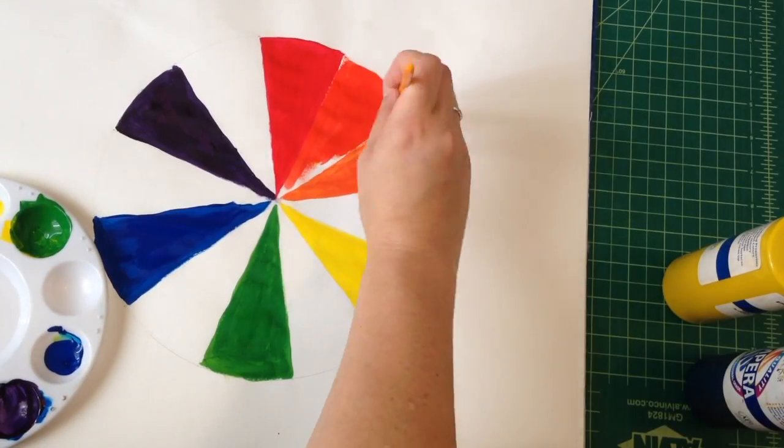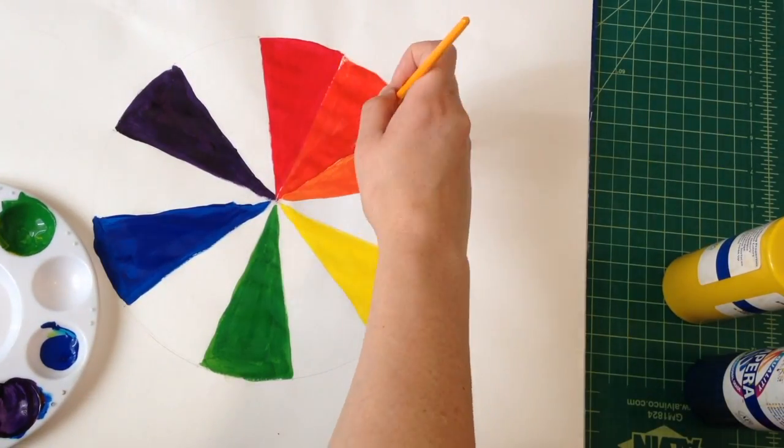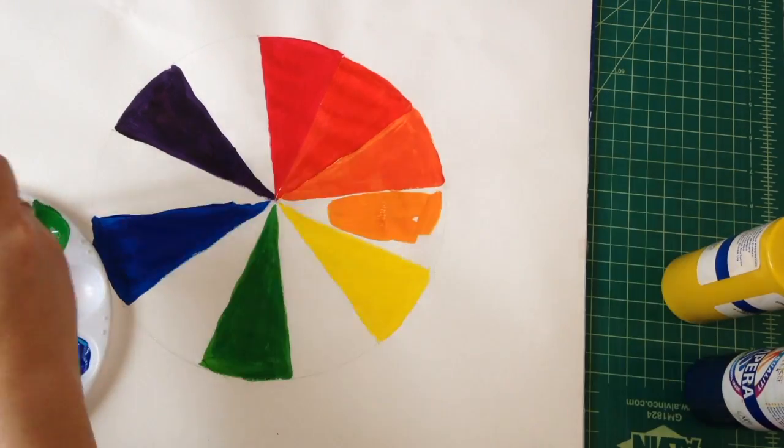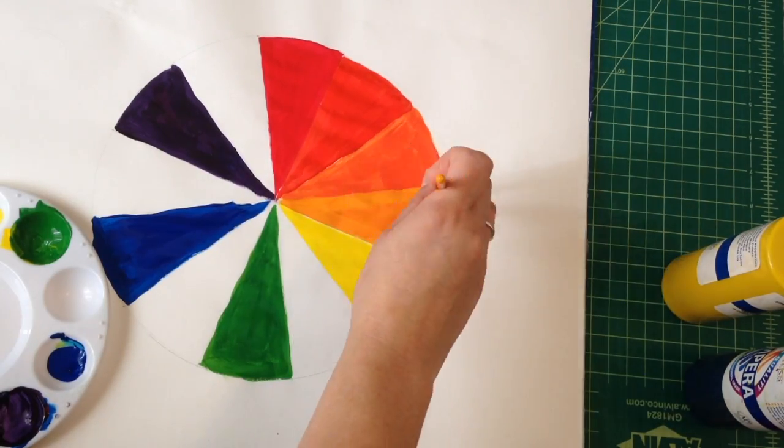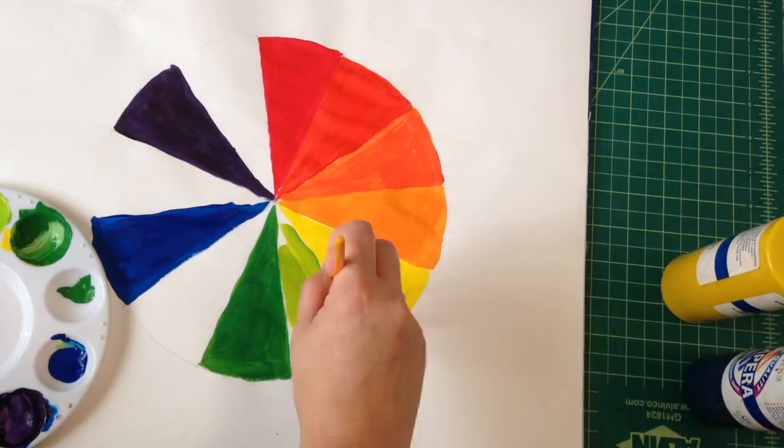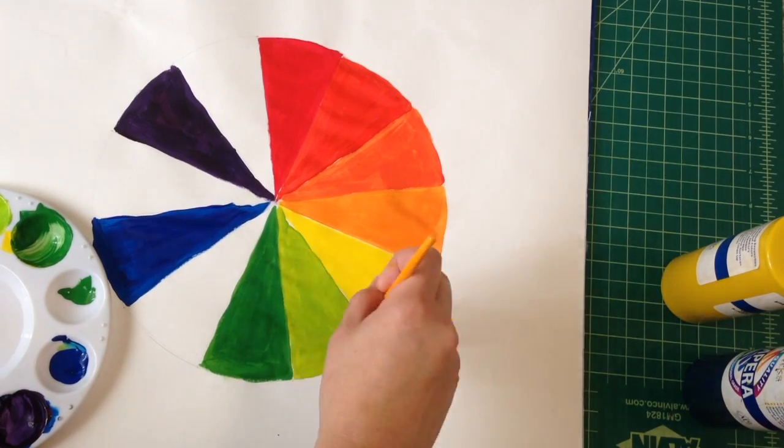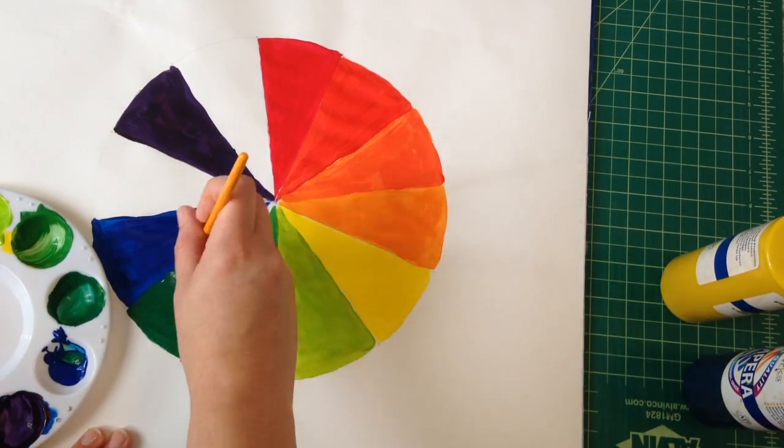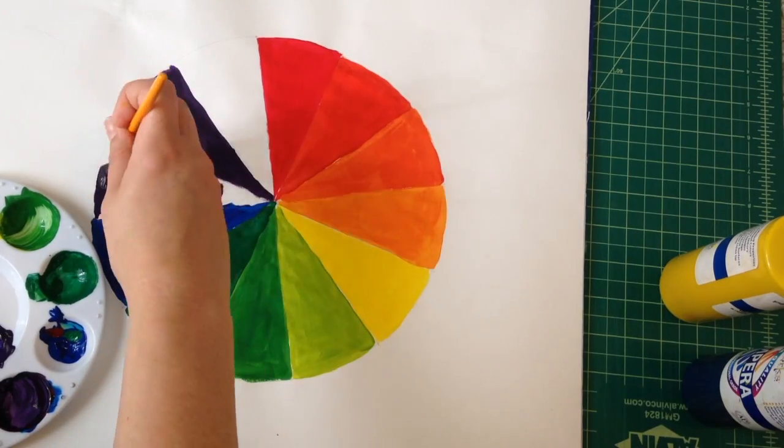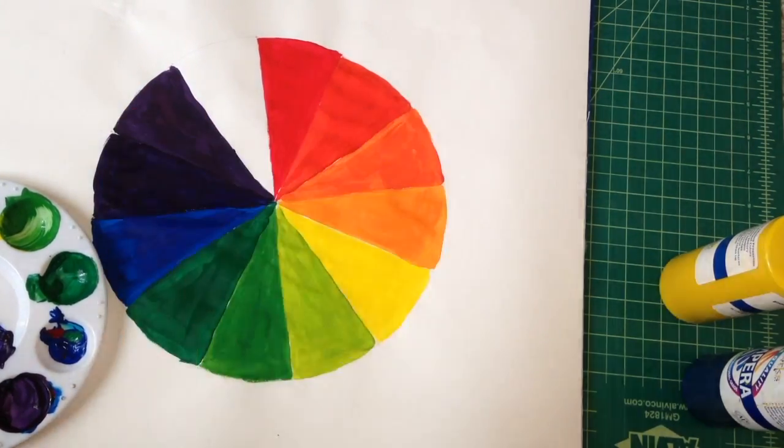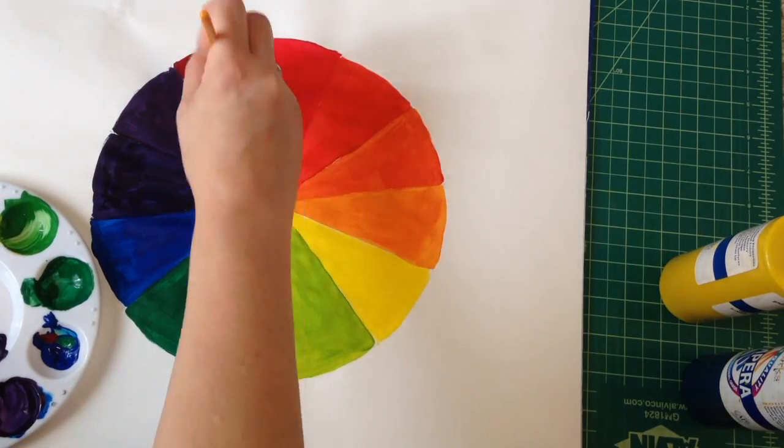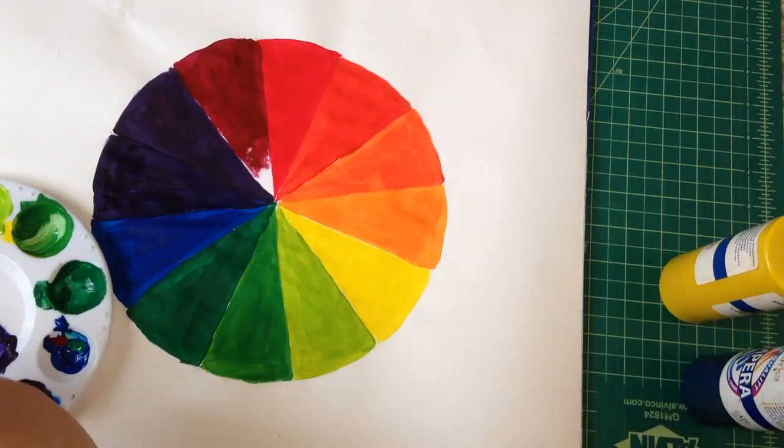Next up you can mix all your intermediate or tertiary colors and the way you would do that is you would mix your primary and secondary colors and in the middle would go your intermediate color. And when you're labeling them just remember the primary color is always the first on the label. So if you did red and orange it's red-orange or yellow and orange it's yellow-orange.